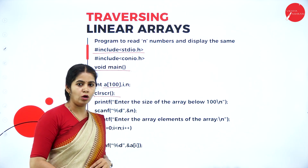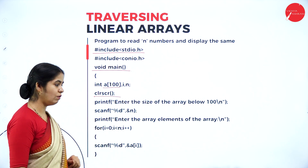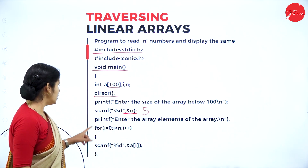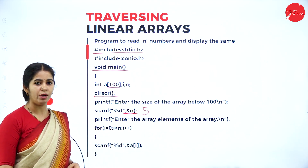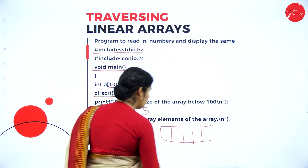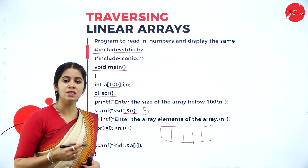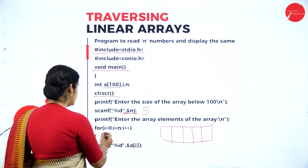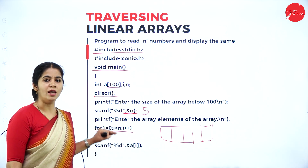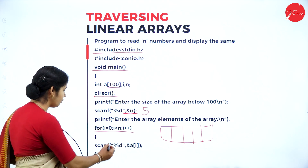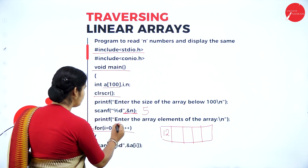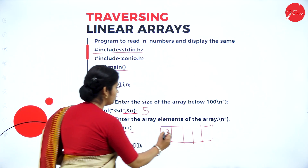We print 'enter the size of array' — out of hundred elements, how many elements we want to enter. Let's say n is equal to 5. Then we print 'enter the elements of array'. Using a for loop with a scanf statement inside, we read values from the keyboard. The for loop runs 5 times, and 5 values are inserted into the array at indices 0 through 4.